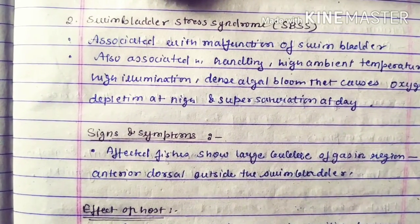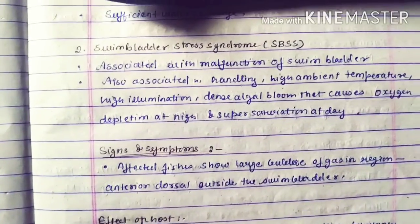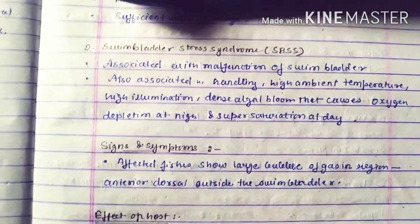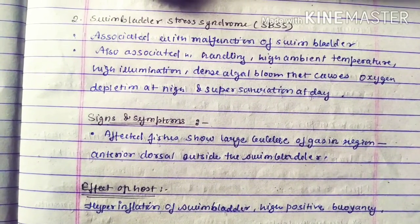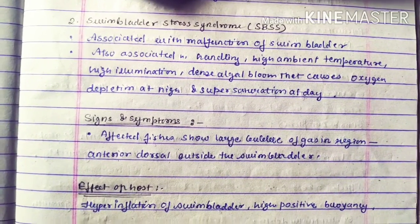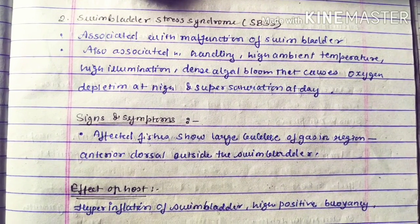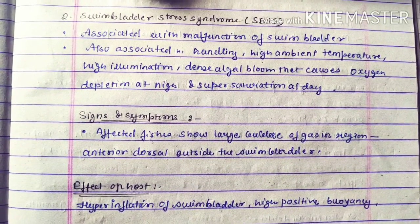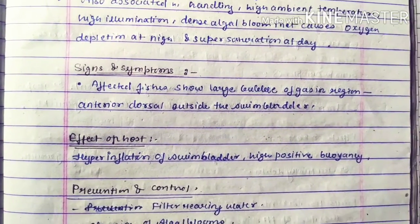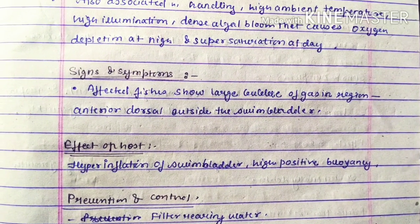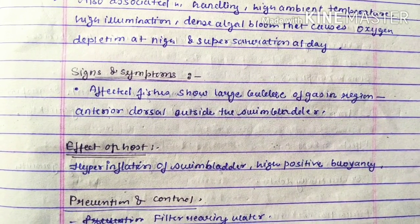The second non-infectious disease is swim bladder stress syndrome, also known as SBSS. It is associated with malfunction of the swim bladder and is also associated with handling, high ambient temperature, high illumination, and dense algal bloom that causes oxygen depletion at night and supersaturation during the day.